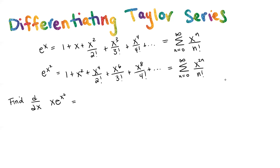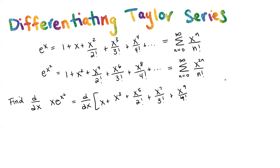Now let's give ourselves a goal: find the derivative of x times e to the x squared. First we want to find x times e to the x squared, so we multiply x by everything. That gives us x plus x cubed plus x to the 5 over 2 factorial plus x to the 7 over 3 factorial plus x to the 9 over 4 factorial and so on. In summation notation, we're going to take the derivative of the sum from n equals 0 to infinity of x to the 2n plus 1 over n factorial.